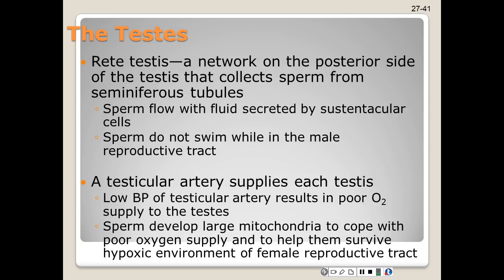Blood pressure in the testicular artery is very low, and it is one of few arteries to have no pulse. Blood flow to the testes is meager and oxygen is in very short supply. In response to this low oxygen supply, sperm develops a large amount of mitochondria to help survive any type of hypoxic conditions in the female reproductive tract.